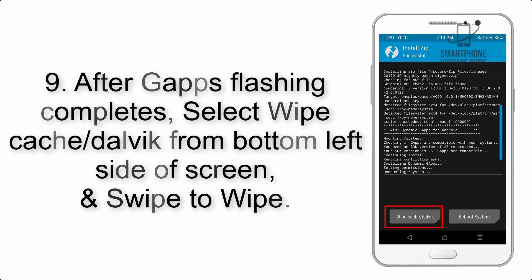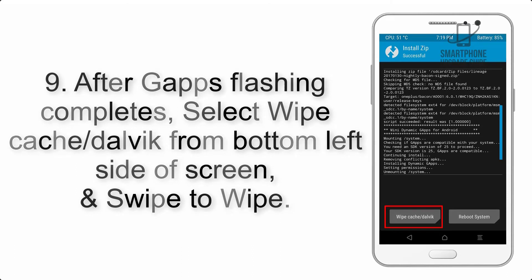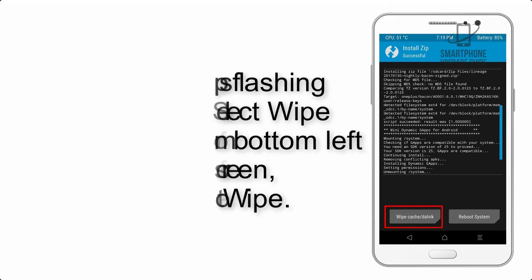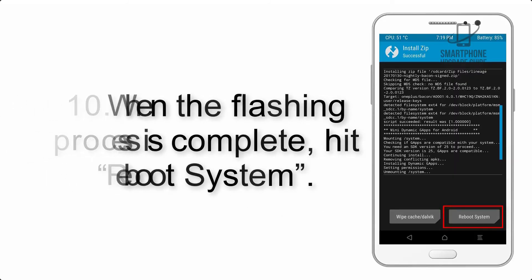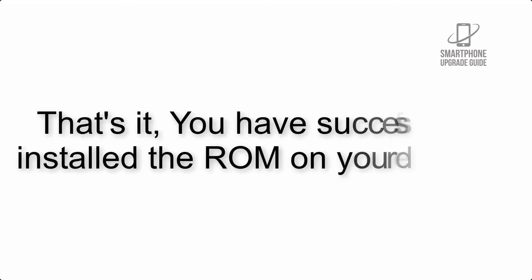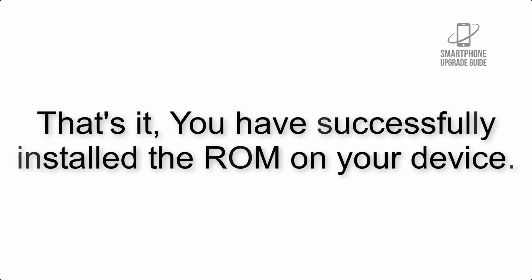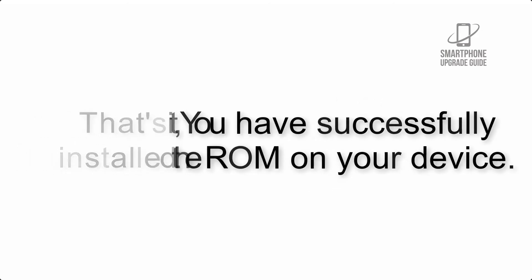Step 9: After GApps flashing completes, select Wipe Cache and Dalvik from the bottom left side of the screen and swipe to wipe. Step 10: When the flashing process is complete, hit Reboot System. That's it — you have successfully installed the ROM on your device.